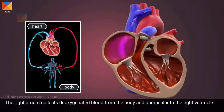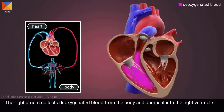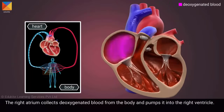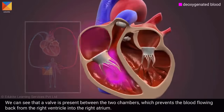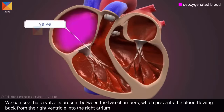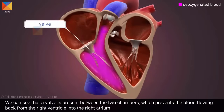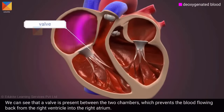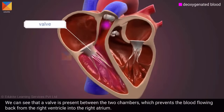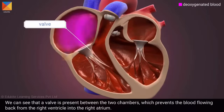The right atrium collects deoxygenated blood from the body and pumps it into the right ventricle. We can see that a valve is present between the two chambers, which prevents the blood from flowing back from the right ventricle into the right atrium.